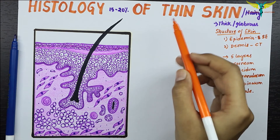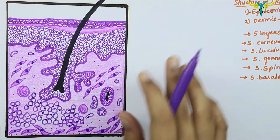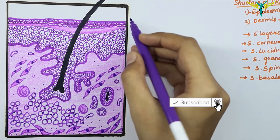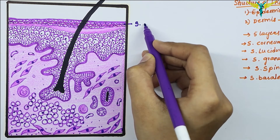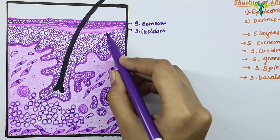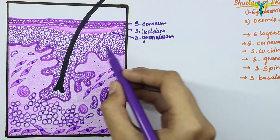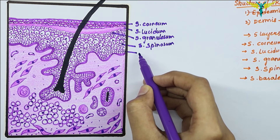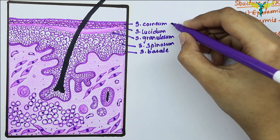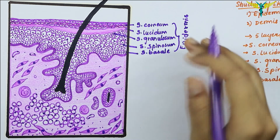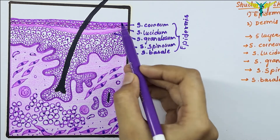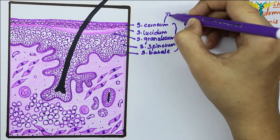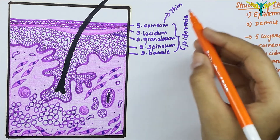Now let's label this diagram showing the proper histology of the thin skin. This entire area is the epidermis and these are its layers: this is the first layer, the stratum corneum; this is the stratum lucidum; this layer is the stratum granulosum; this spine-like layer is the stratum spinosum; and this is the last or innermost layer, the stratum basale. This whole area constitutes the epidermis, which in thin skin is made up of a thin layer of keratinized squamous epithelium.